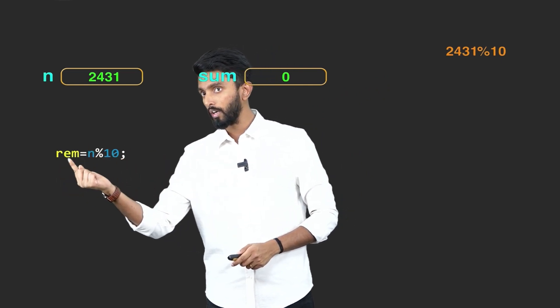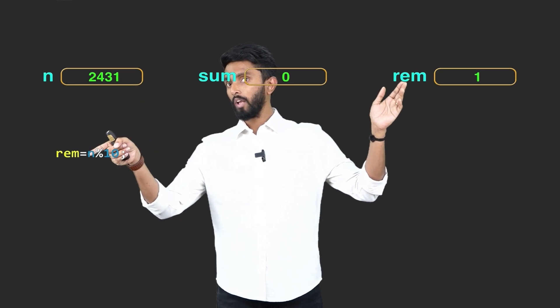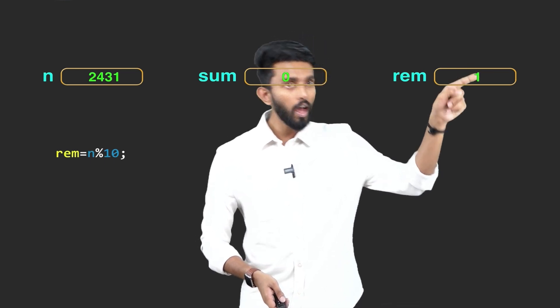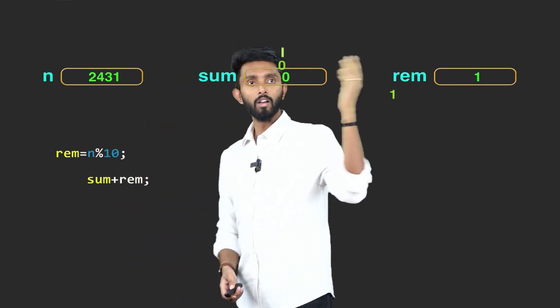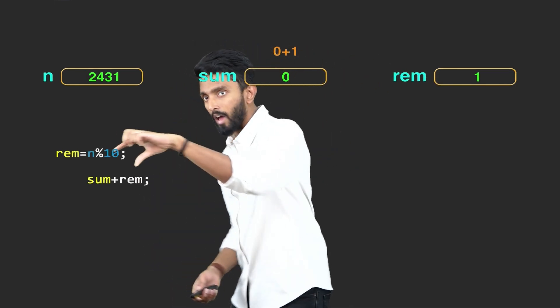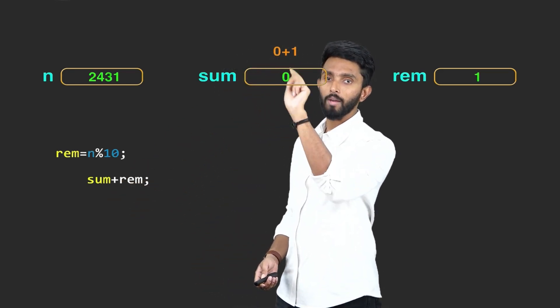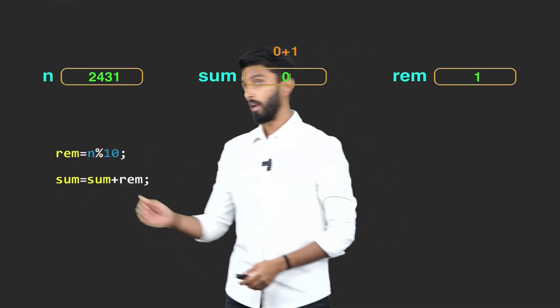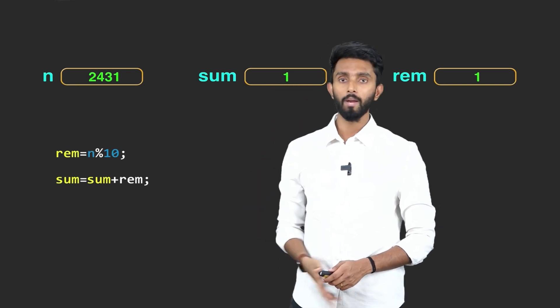I will take that last digit and store it in a variable called remainder, or rem. So 2431 modulo 10 gives remainder 1. Now take that last digit and add it to the existing value of sum: sum plus remainder, which is 0 plus 1 = 1, and assign that back to sum. Remember, assignment is right to left. So sum gets updated from 0 to 1.